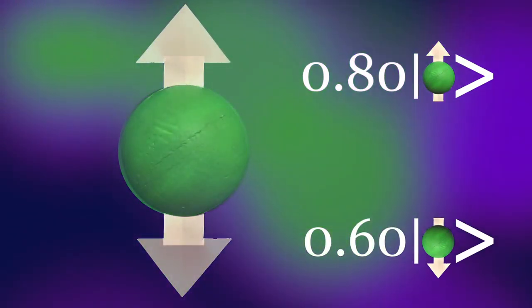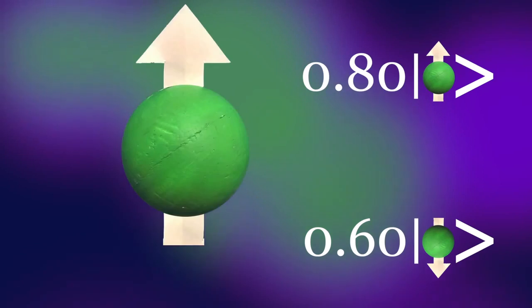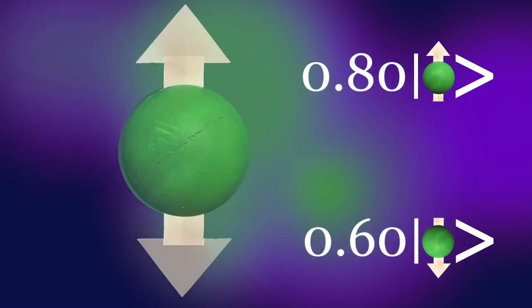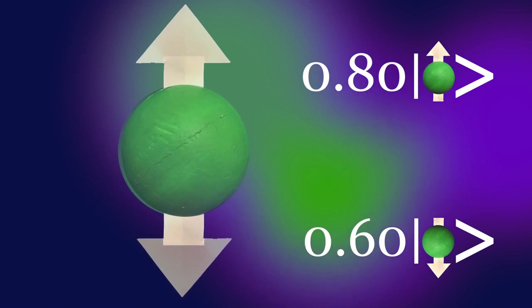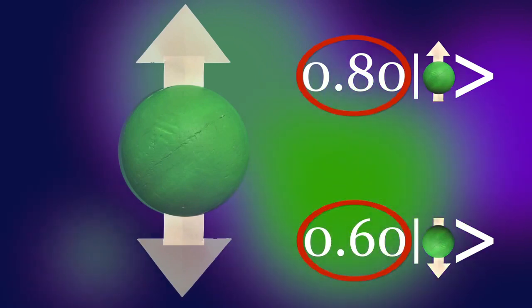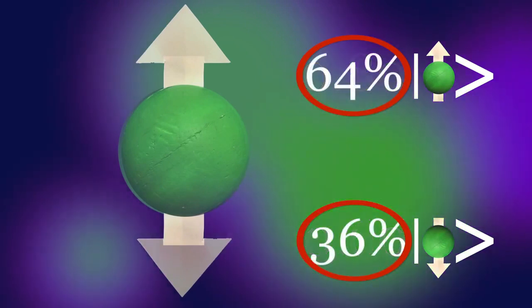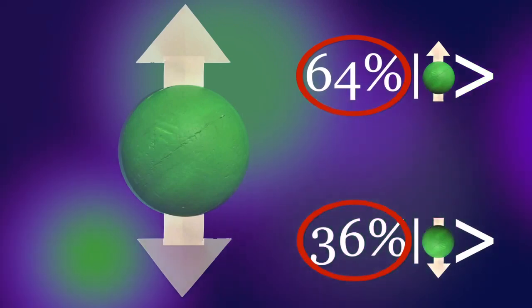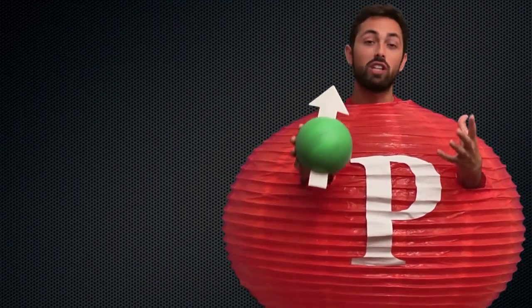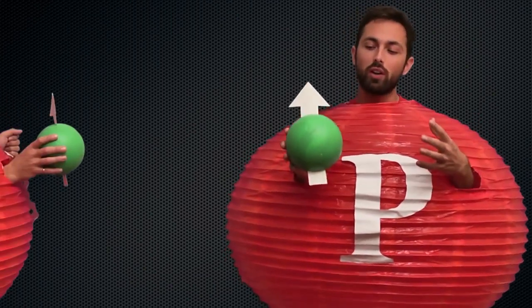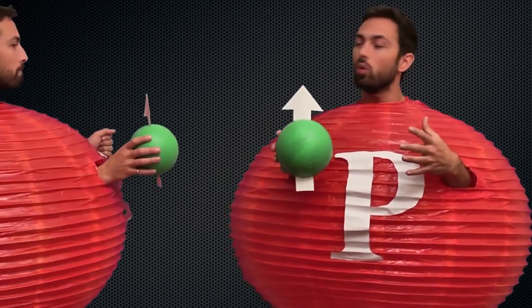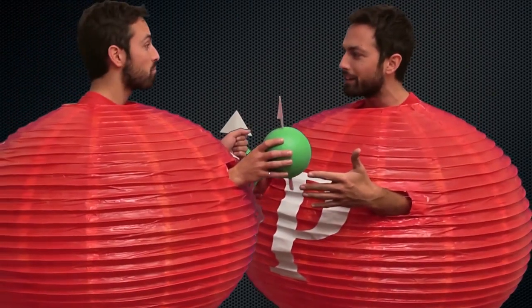Now when you measure the spin, it will be either up or down. But before you measure it, the electron can exist in what's called a quantum superposition, where these coefficients indicate the relative probability of finding the electron in one state or the other. Now it's hard to imagine how this enables the incredible computing power of quantum computers without considering two interacting quantum bits.